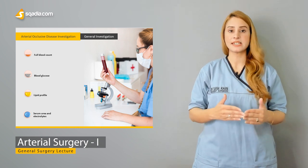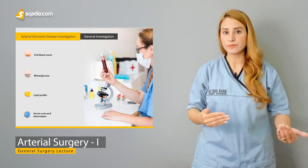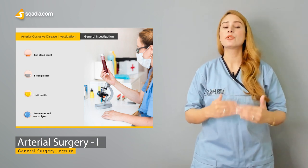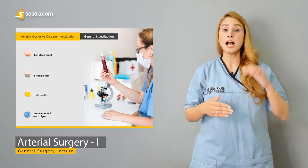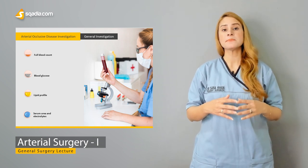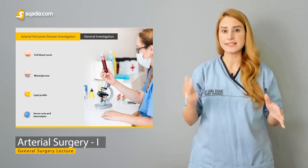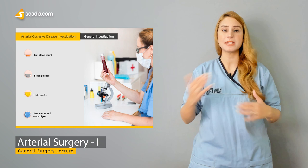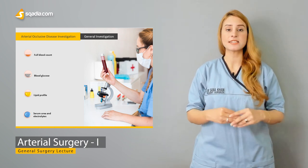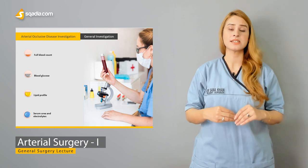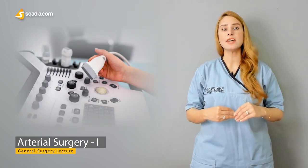We'll cover how to investigate a case of arterial stenosis or occlusion, starting from general investigations — what kind of general investigations to order and how they help in making the diagnosis. We'll also discuss the relationship of diabetes, hypertension, and hyperlipidemia on the development of atherogenesis and ultimately stenosis and occlusion.